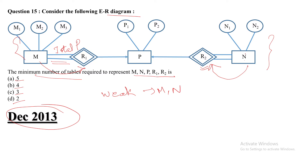A weak entity does not have its own key attribute — it has only a partial key, and the partial key is denoted by a dashed line. But in this diagram, no partial key is mentioned for entities M and N. So you can take any one — I am taking N1 as the partial key of entity N, and M1 as the partial key of entity M.